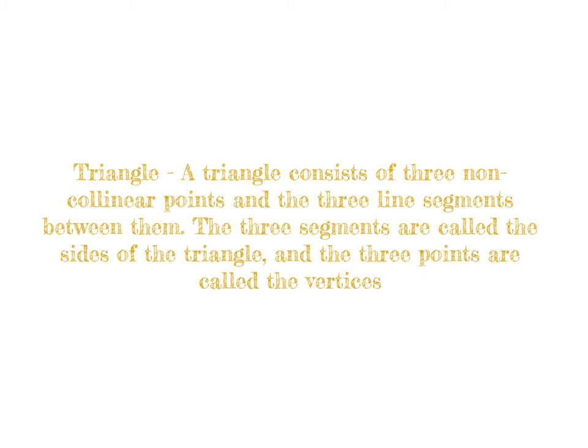Next, we have triangle, and a triangle consists of three non-collinear points, and the three line segments between them. The three segments are called the sides of the triangle, and the three points are called the vertices.